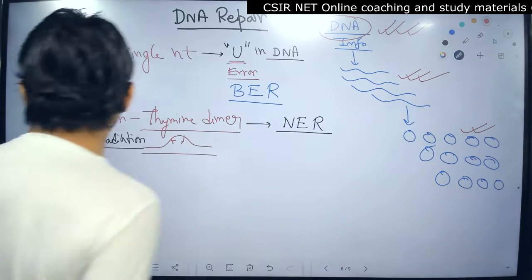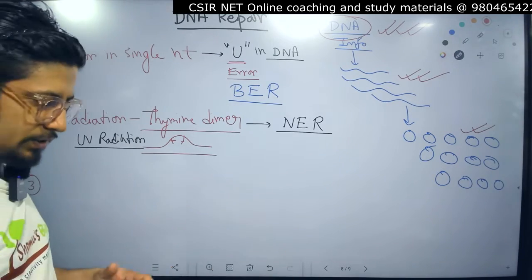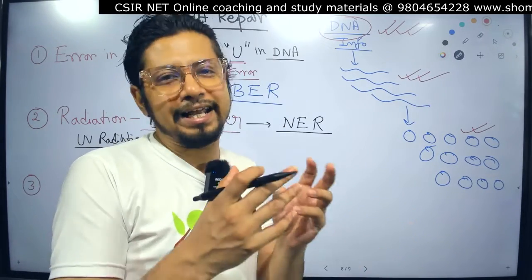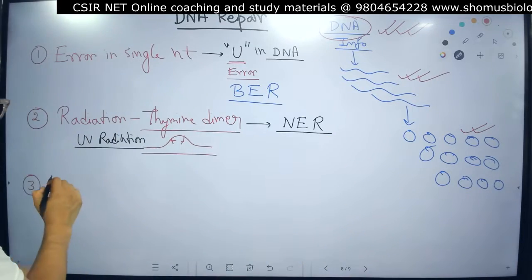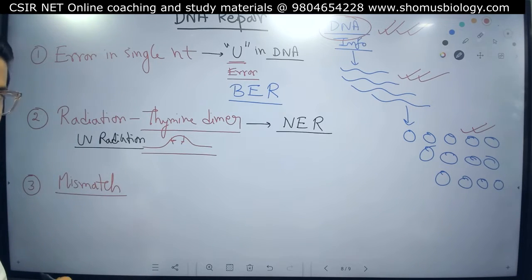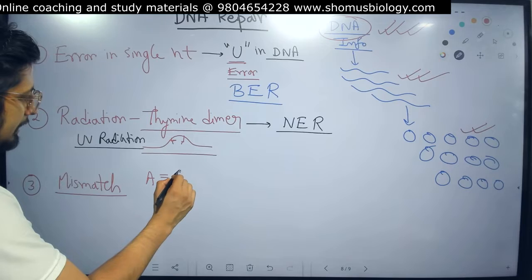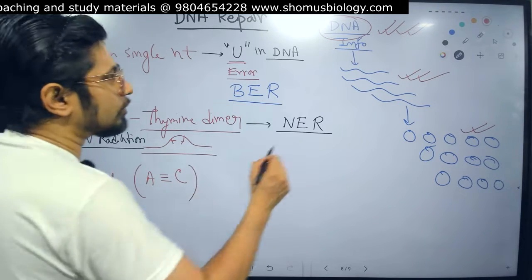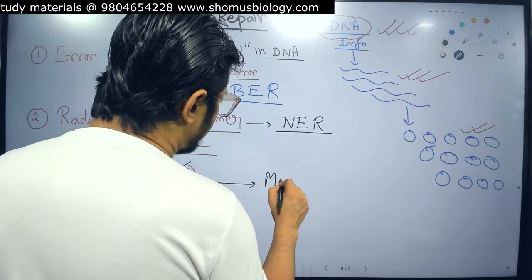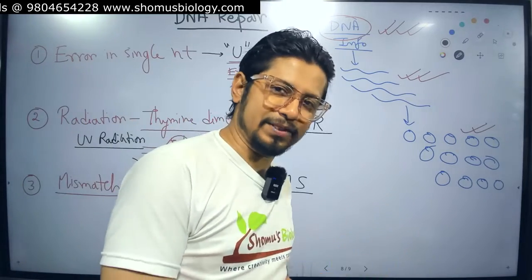The third kind of problem is that during DNA replication, although DNA polymerase has proofreading activity, there are still erroneous nucleotides added — there is a mismatch of nucleotide that is added. For example, A is paired with C, or G is paired with T — a wrong bonding, a wrong interaction. To fix this mismatch, we have Methyl Mismatch Repair, also known as DNA Mismatch Repair, short form MMR.